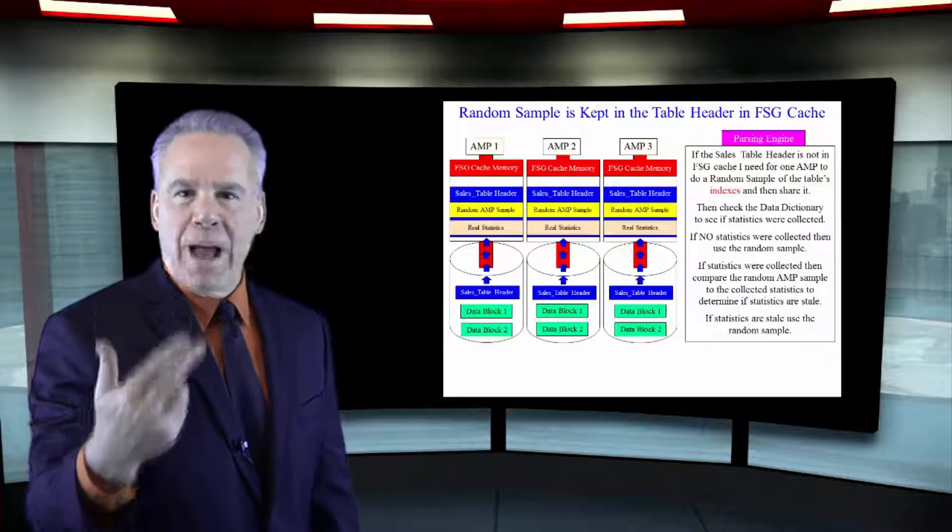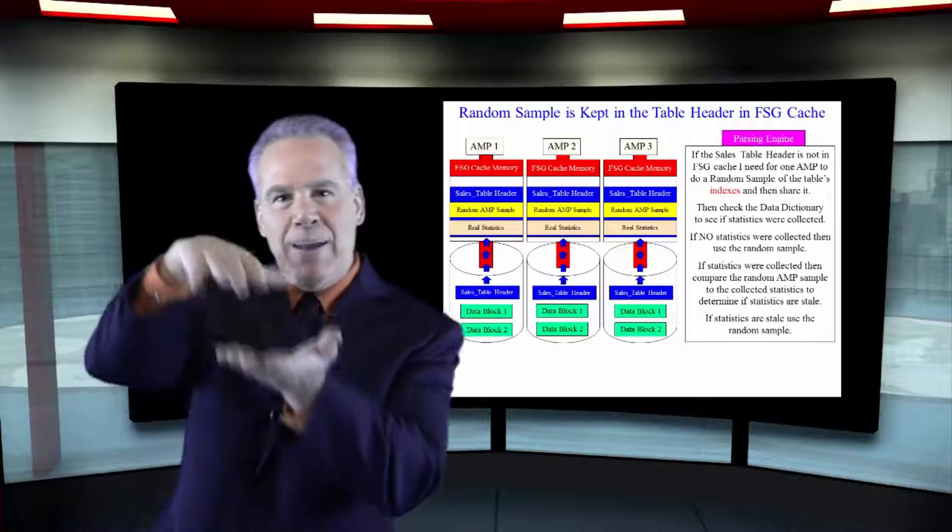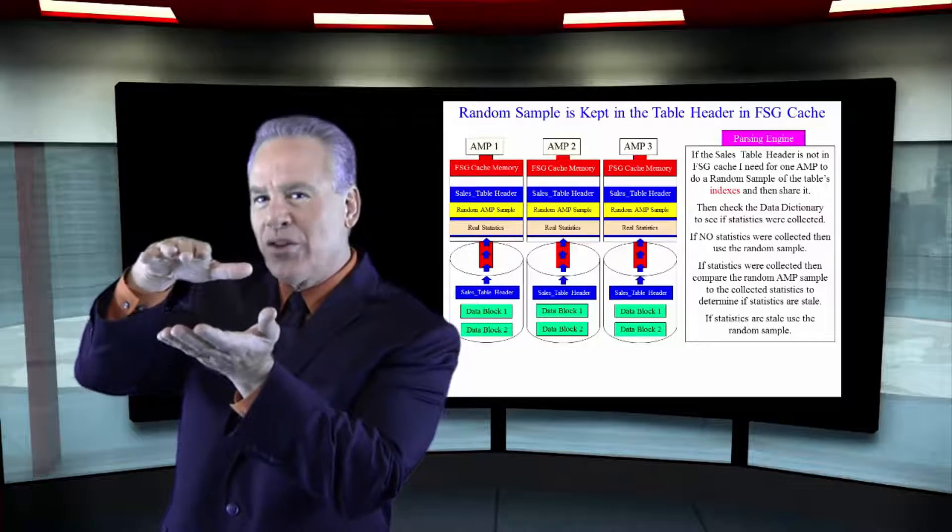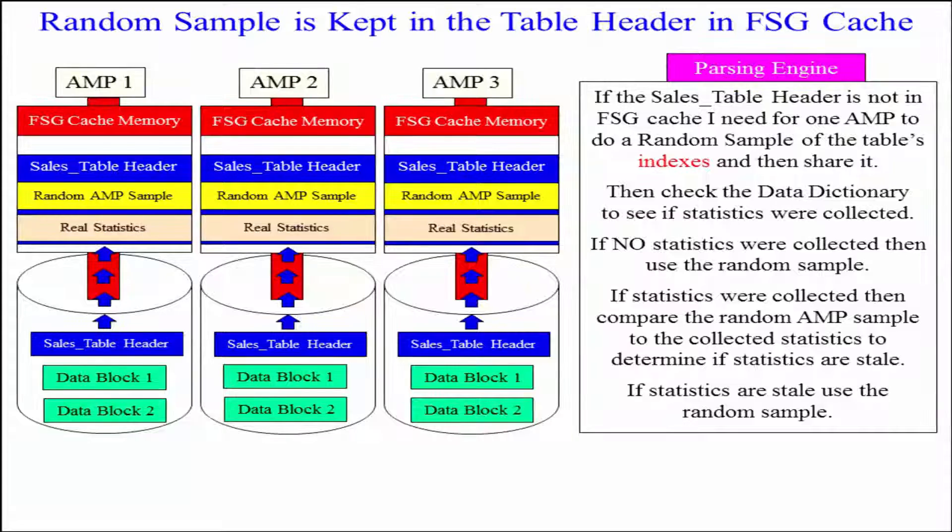You see, most of the time, a popular table will have that table header still in memory, so they don't have to keep going back and doing that random AMP sample.